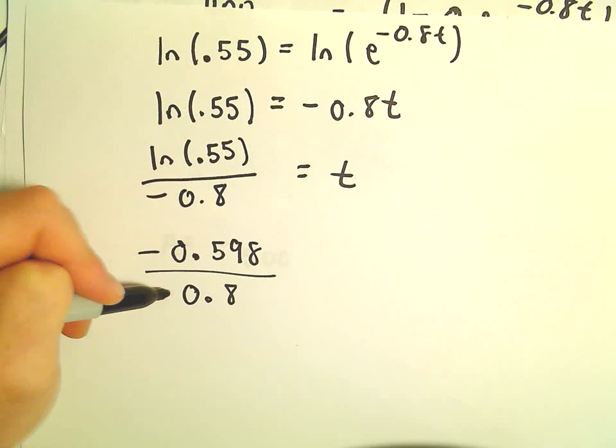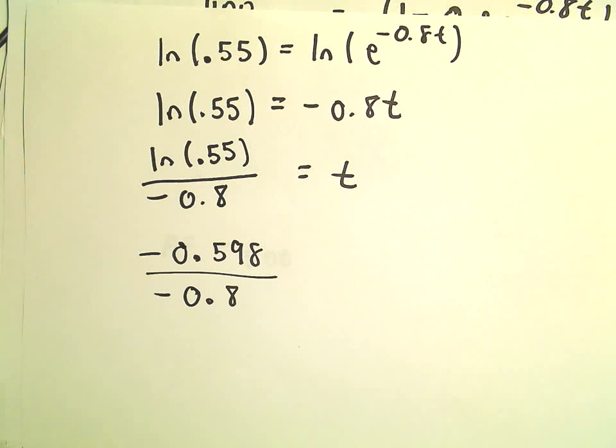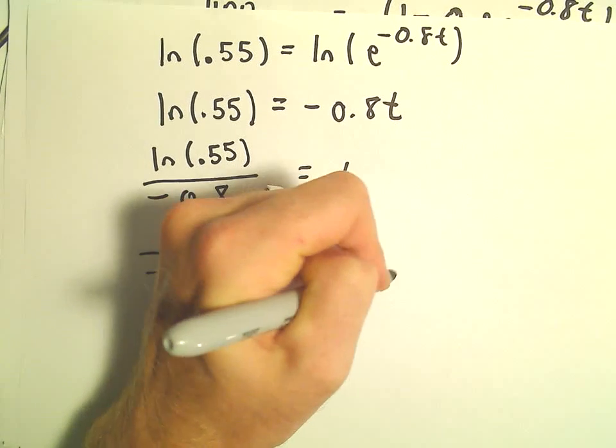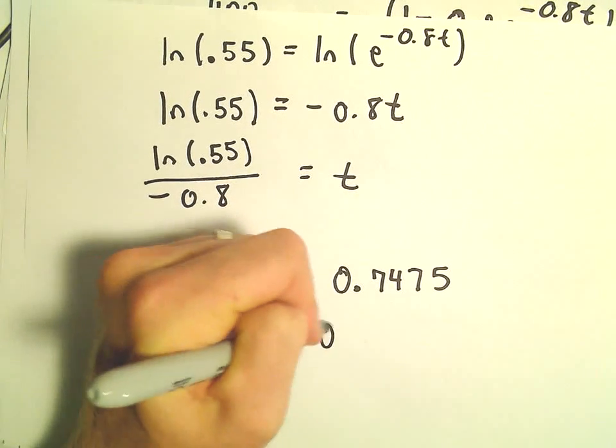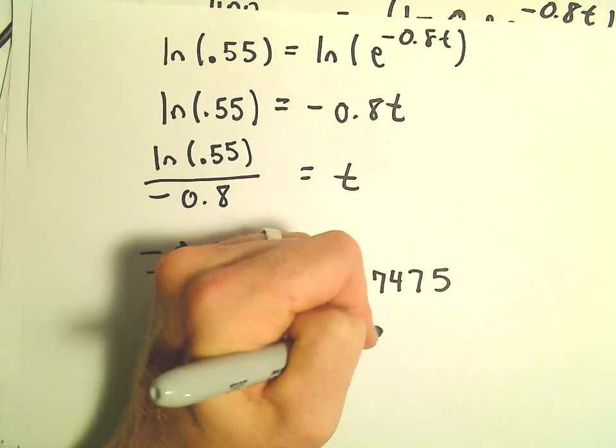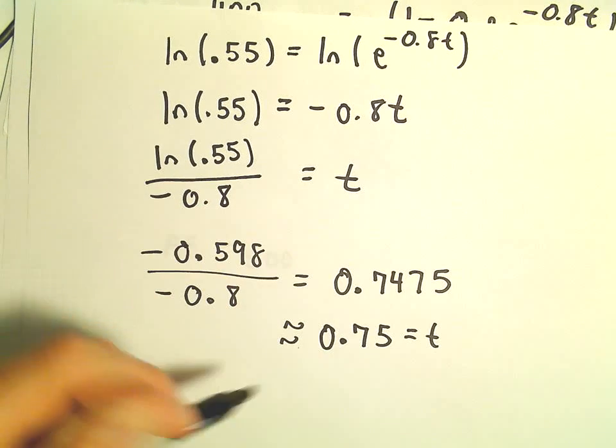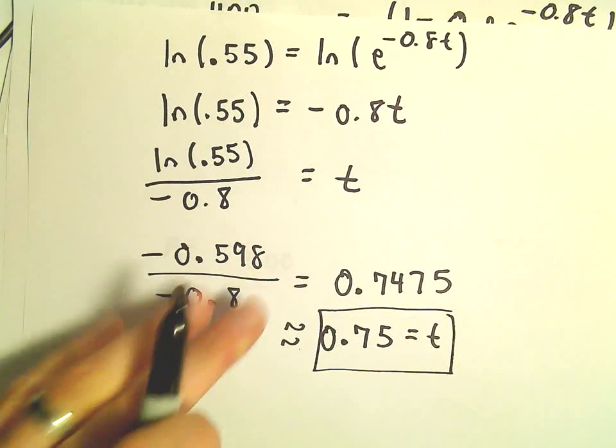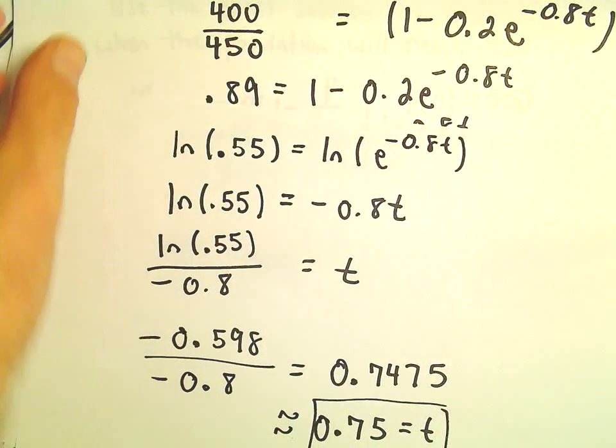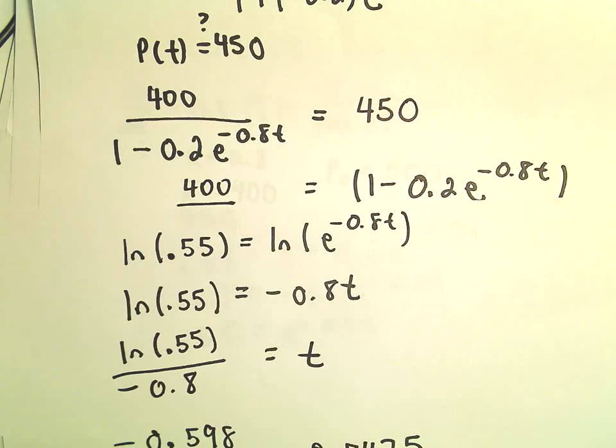Just using a few extra decimal places here. So 0.598 divided by 0.8, that's going to give us 0.7475. Or I'm going to say roughly when t is roughly equal to 0.75 is when the population will drop down to 450.